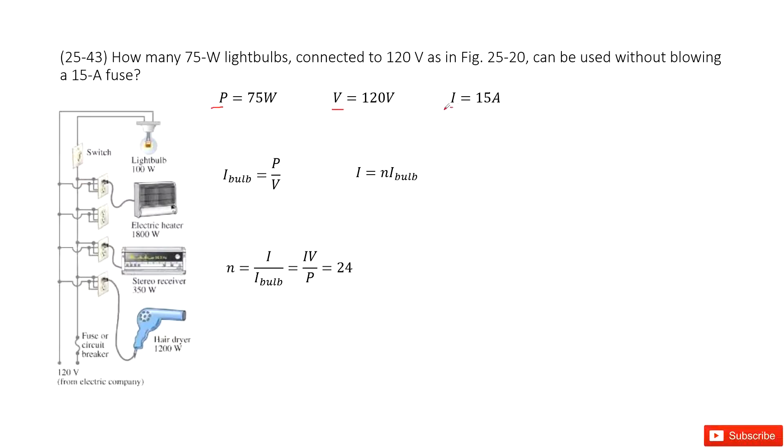So that means the total current for the household should be below the 15 amperes. And then we can see for household currents, all the devices are connected in parallel. So for parallel connections, the current in the main branches equals the sum of the current for each branch.